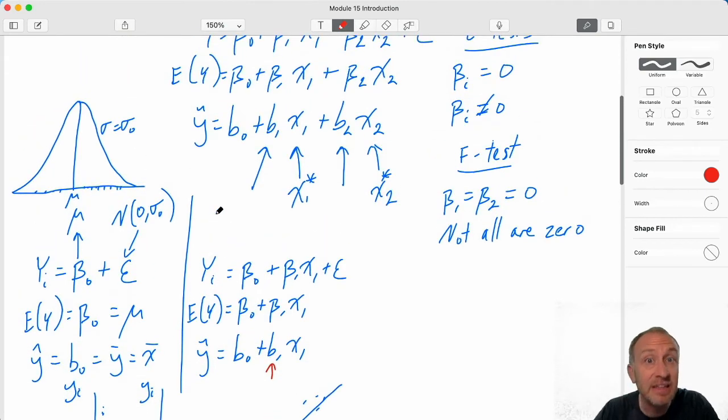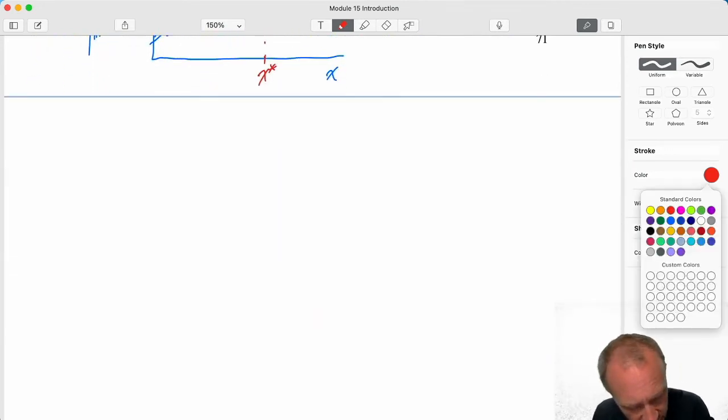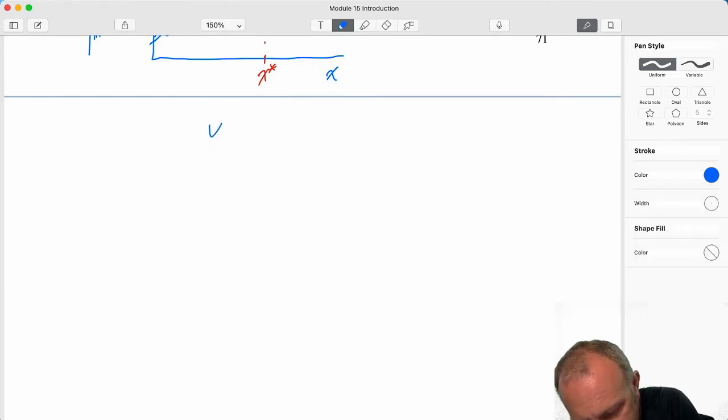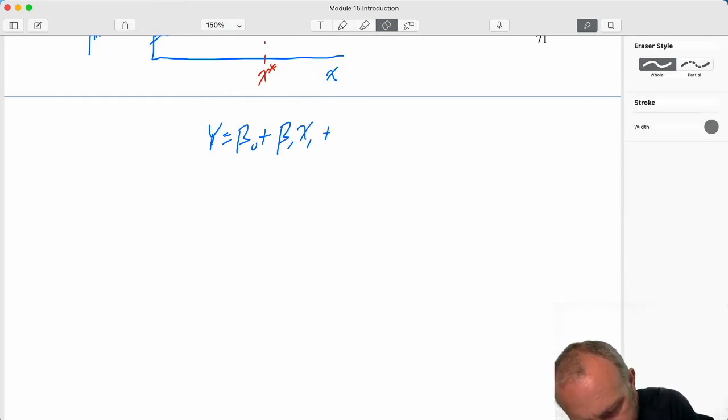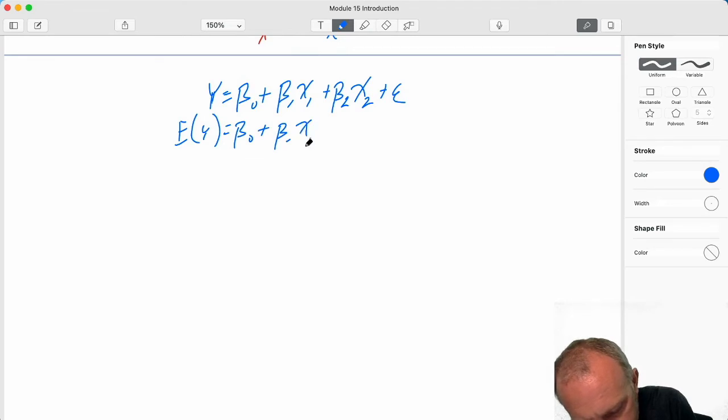Well, finally, through multiple regression, this hasn't changed. Now, I'm bringing in another piece of information. So now I have not only X1 but X2. And this is now, of course, what we're going to estimate. We have that expected value. I gather my sample, and I have B0, B1, and B2.